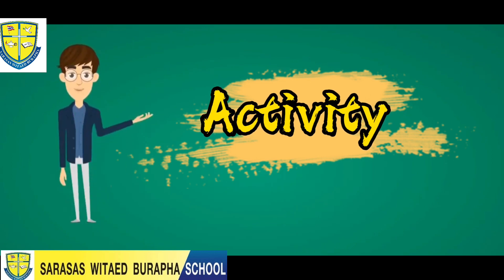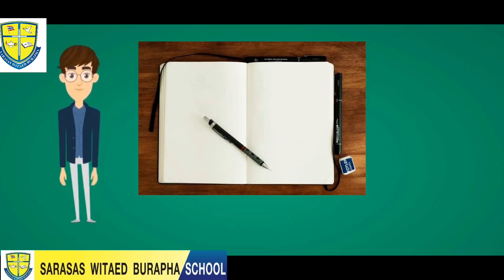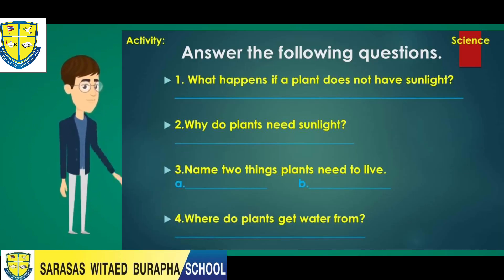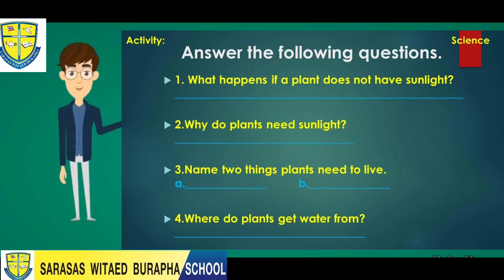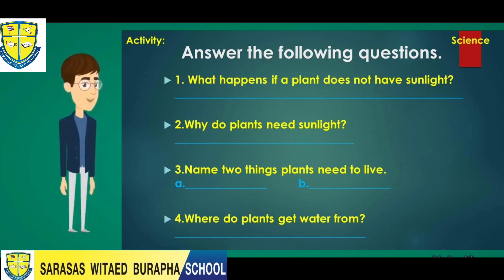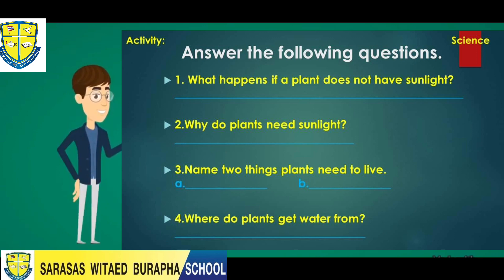Now we're ready to answer your activity. Please print your activity or copy it into your notebook. Answer the following questions: Number one, what happens if a plant does not have sunlight? Number two, why do plants need sunlight? Number three, name two things plants need to live. Number four, where do plants get water from?